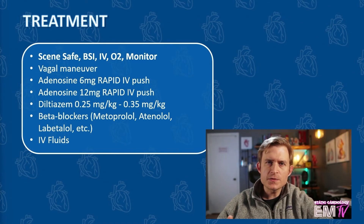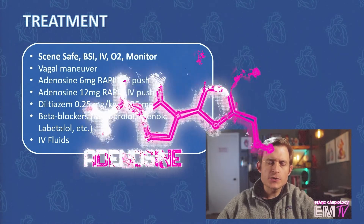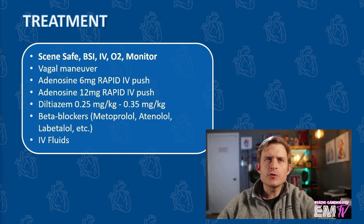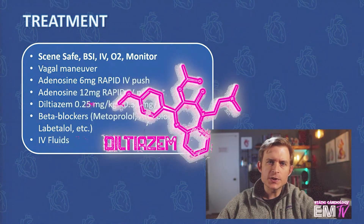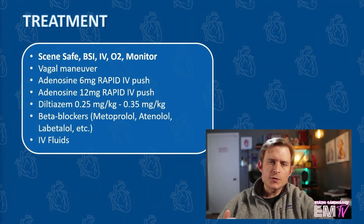For SVT, the most definitive medication is going to be adenosine. The first dose of adenosine will be 6 mg rapid IV push, and the second dose will be 12 mg rapid IV push. Following the adenosine, I could consider the administration of diltiazem, given as a slower IV push. The dose for this patient is going to be 0.25 to 0.35 mg per kg.